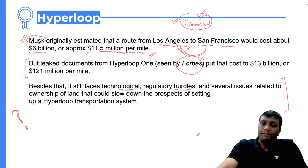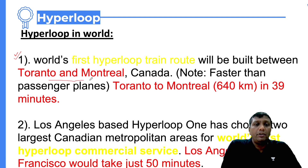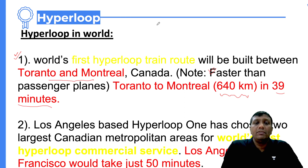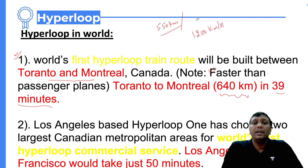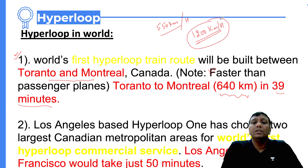Worldwide, the first hyperloop train route is planned between Toronto and Montreal — two major Canadian cities — covering a distance of around 640 kilometers, and the journey will be completed in 39 minutes. The speed of the hyperloop train will be faster than passenger aeroplanes, which move at around 500 to 550 kilometers per hour. In the case of the hyperloop, we can reach around 1200 kilometers per hour.